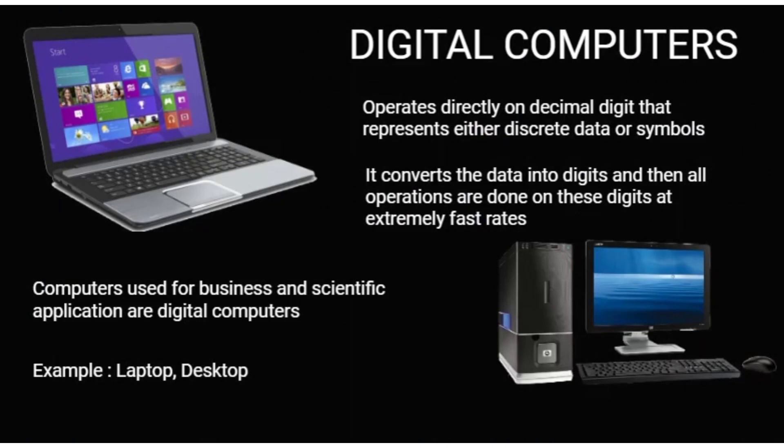The next category is digital computers. These computers are able to process data which is in discrete form — discrete data or discrete symbols. The computers you have in your homes, offices, and buildings that process digital data are all digital computers. Examples include laptops, desktops, and so on.